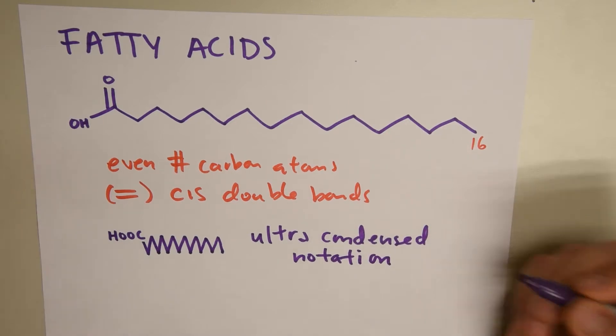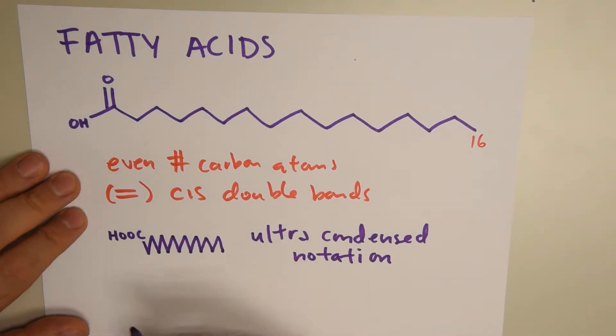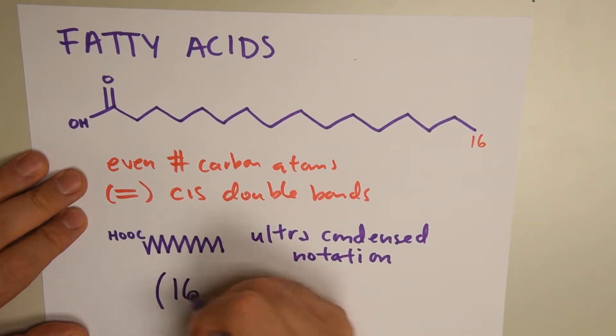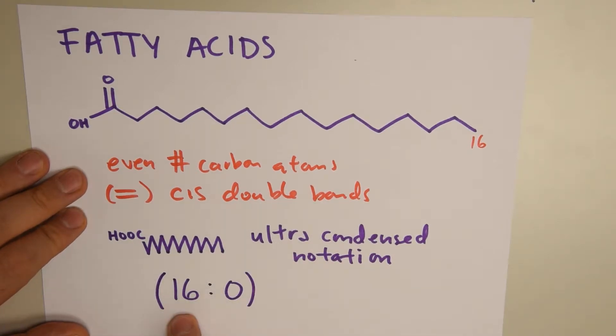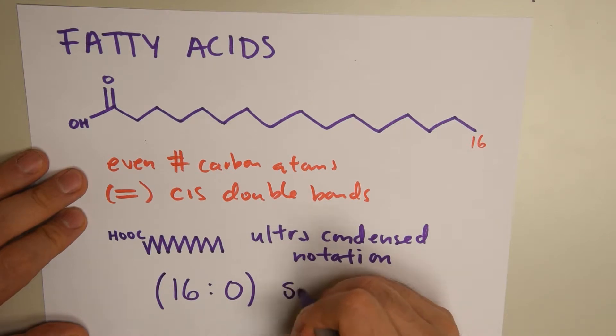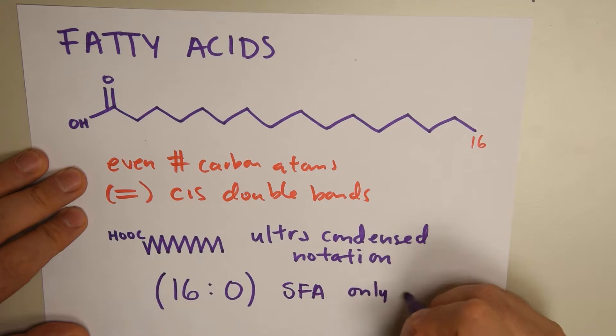We can also create a notation out of this. When we have a notation for this, we're going to write 16, then a colon, a zero. This means there are 16 carbon atoms and there are no double bonds. This is a saturated fatty acid, which means it's only single bonding.